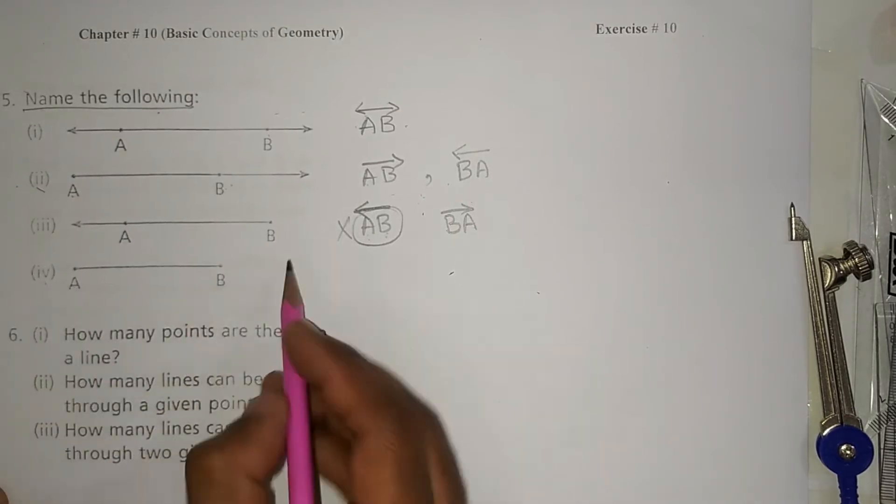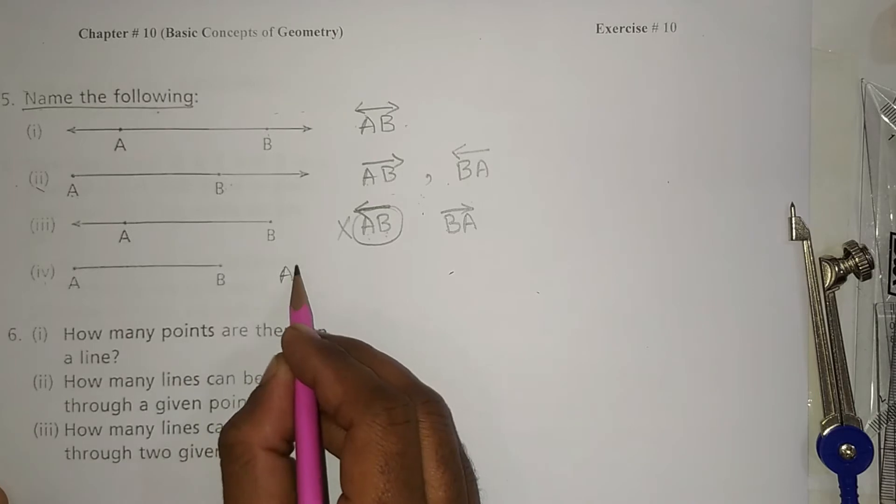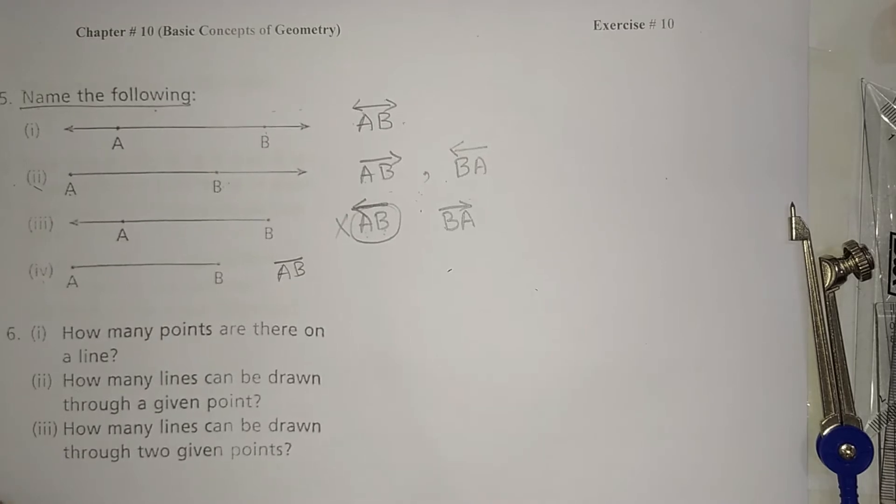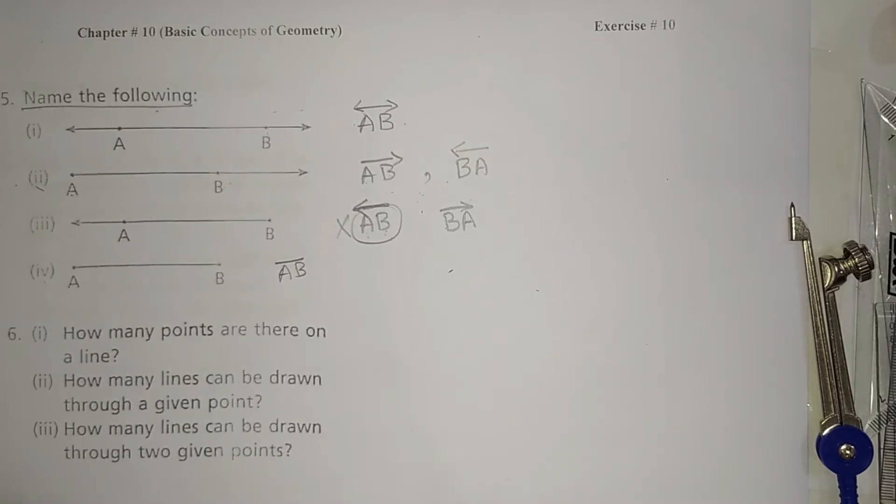In part number four, this is a line segment. You can write like this: AB. Now for question number six, part number one, hopefully you understand question number four and five. If you want to see previous questions, you have to visit my playlist of class seven.